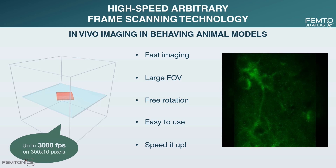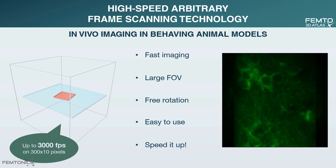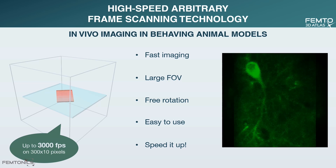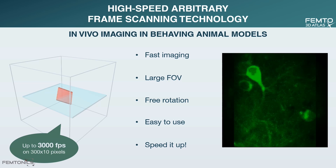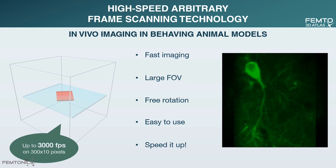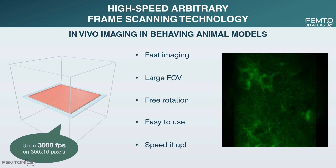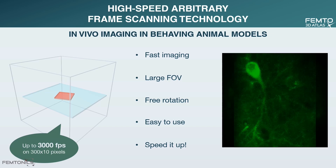If you want to further increase speed, focus on a smaller area so you can reach 3000 frames per second. Compared to conventional resonant microscopes, the system is silent as there is no scanner noise — this feature may be very important in experiments involving behavior. At high speed, we do not lose image quality; therefore, high optical resolution gives access to submicron features.